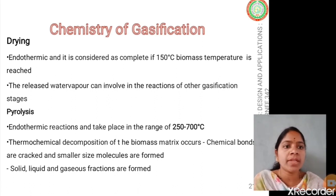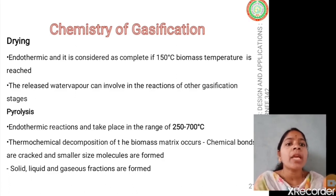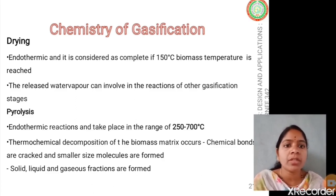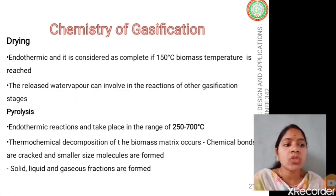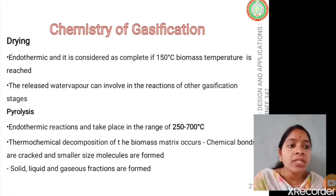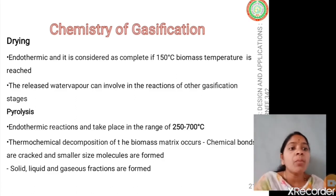The drying stage is the first stage of gasification and is endothermic. Heat is required to evaporate water molecules from the biomass feedstock to make it suitable for the next process, which is pyrolysis. Around 150°C of temperature is needed to dry the feedstock to preferably less than 10% moisture. The water vapor released can be utilized in forthcoming zones as a water-gas reaction agent to crack molecules into combustible gases.